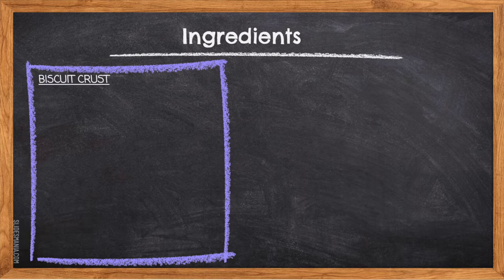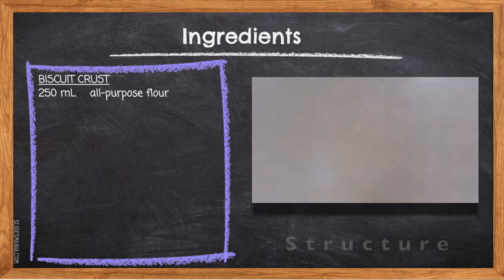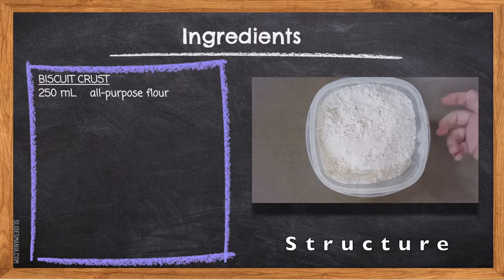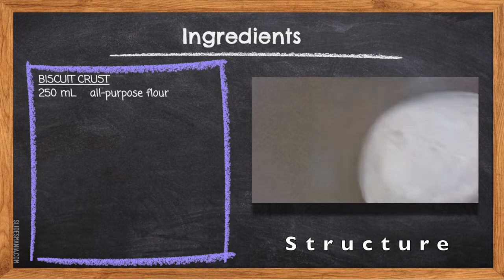Biscuit Crust — 250ml All-Purpose Flour. Gluten is the protein found within flour that, when combined with a liquid, will form strong elastic strands. Heat from the oven will harden this protein, creating the structure of our biscuits.